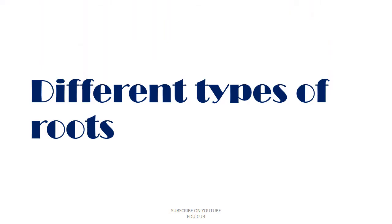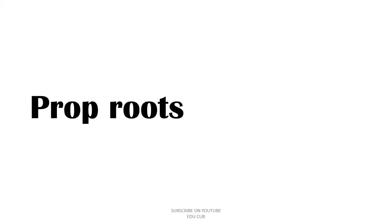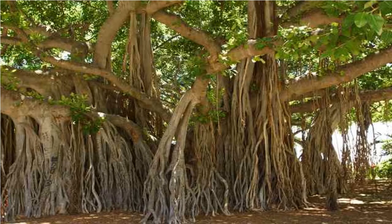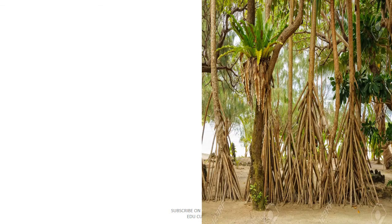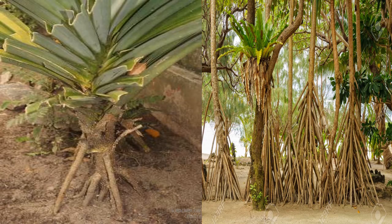Now let's discuss different types of roots. The first type is prop roots — we can see prop roots in the banyan tree. Their function is to support the branches; the prop roots support the branches of the banyan tree to keep it strong. The next type is stilt roots, which can be seen in rampe and pandanus. Their function is to support the stem.